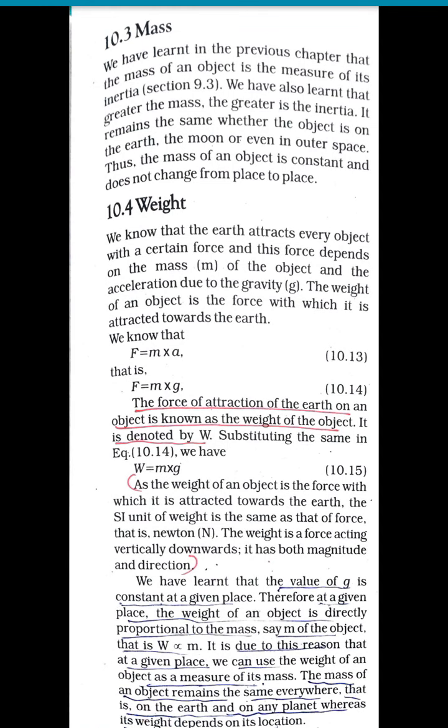Welcome back to chapter 10, Gravitation. In chapter 9 we learned that mass of an object is a measure of its inertia — greater the mass, greater the inertia. The mass of an object is constant and does not change from place to place. The earth attracts every object with a force that depends on the mass of the object and the acceleration due to gravity. The weight of an object is the force with which it is attracted towards the earth.